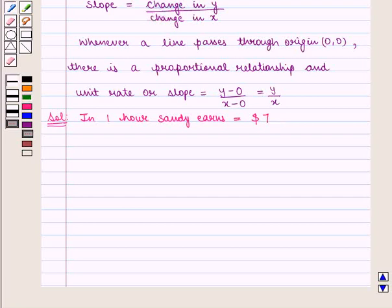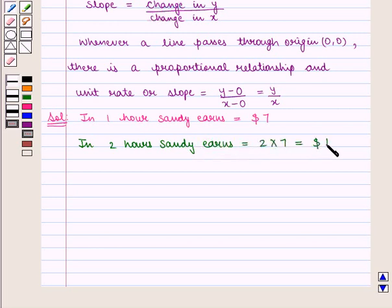It means if we double the number of hours she works, then her earning will also get doubled. That is, in 2 hours, Sandy will earn 2 times 7, that is $14.